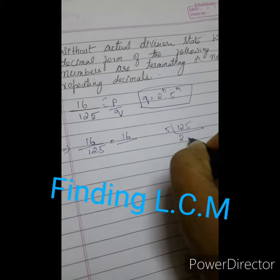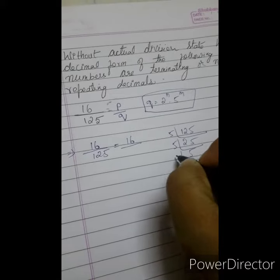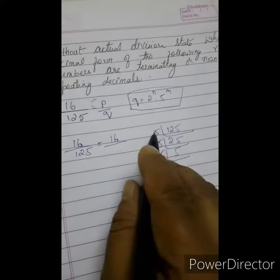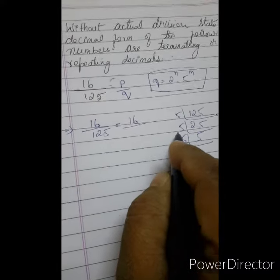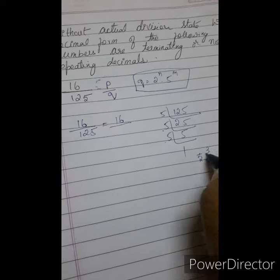5 into 25, 5 into 25, 5 into 5. How many 5's are there? 1, 2, 3. So I will write 5 power 3.